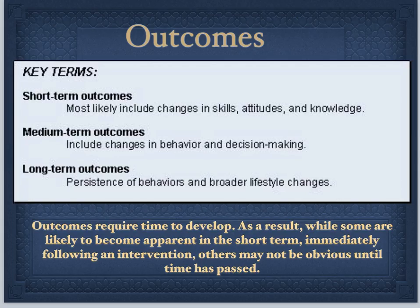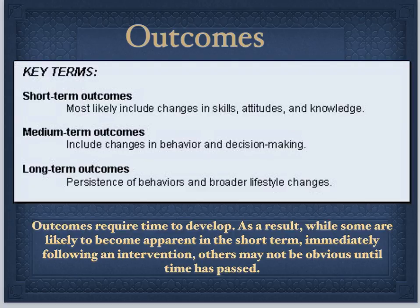When we look at outcomes — when you are discussing what you gathered — keep in mind that there are short-term outcomes, which include mostly changes in skills, attitudes, and knowledge. Medium-term outcomes start to talk about behavior and decision-making, some higher-level stuff that takes longer to solidify. And then long-term outcomes would be maintenance, persistence of behaviors, and broader lifestyle changes — things you would work on with a patient visit after visit. Those may take time, and you may not be there to see that. You may want to focus more on the short-term stuff, which is how most of your objectives were written.